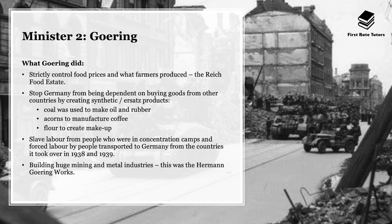When it comes to Hermann Goering, there are several things he implemented. Firstly, he strictly controlled food prices and what farmers produced — the Reich Food Estate. Also, Hermann Goering stopped Germany from becoming dependent on buying goods from other countries by creating synthetic, also called ersatz, products. For example, coal was used to make oil and rubber, acorns were used to manufacture coffee, and flour was used to create makeup. Hitler really wanted Germany to be independent of relying on other countries, so they created alternative products to avoid importing from abroad.